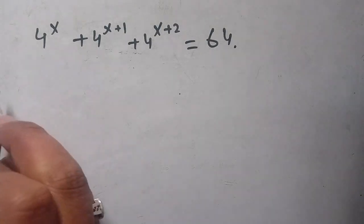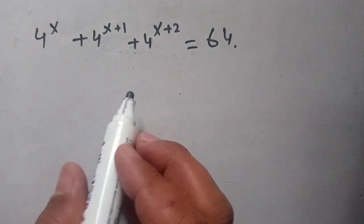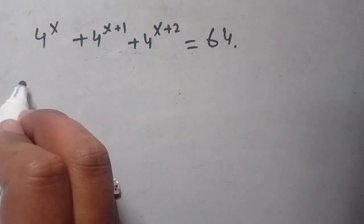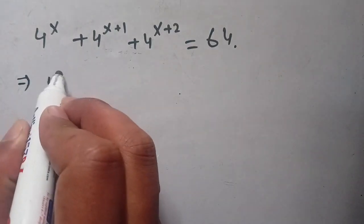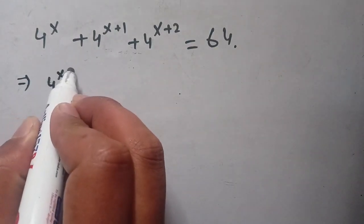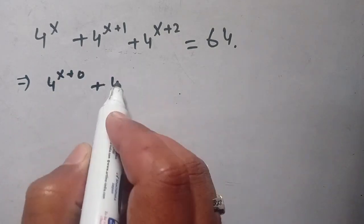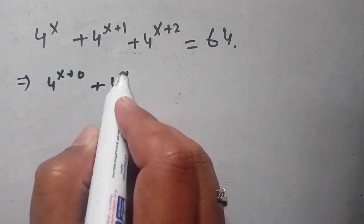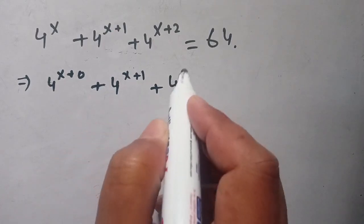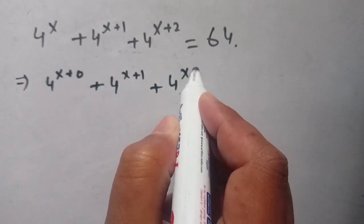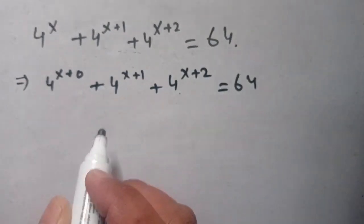Hello everyone, in today's video we are going to solve this exponential equation. We can write it as 4^(x+0) plus 4^(x+1) plus 4^(x+2) is equal to 64.